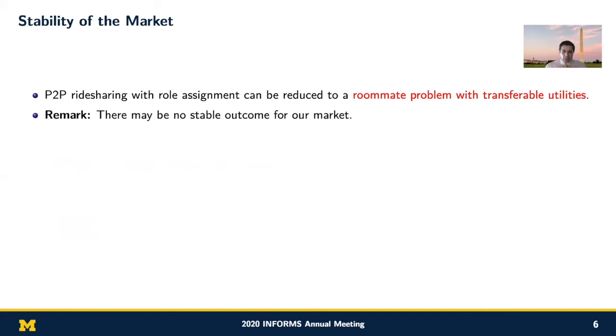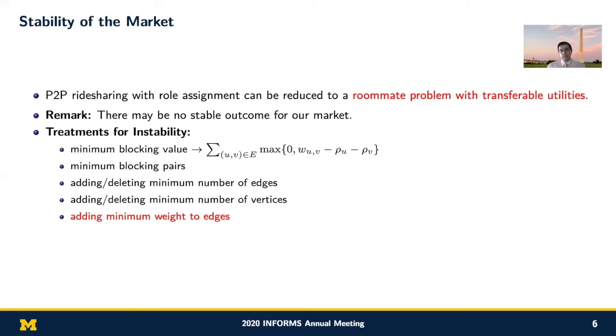Based on what we covered so far, we can say that P2P ride-sharing with role assignment can be modeled as a roommate problem with transferable utilities. I guess it was Ericsson and Karlander in 2001 that showed there might be no stable outcome for this game. So what can we do? In the literature, different treatments have been introduced to deal with unstable markets.